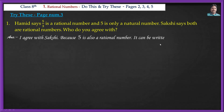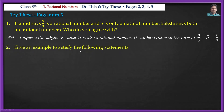Sakshi is correct because 5 is also a rational number — it can be written in the form P/Q. If we write 5 as 5/1, the denominator is 1 (not zero). So 5 qualifies as a rational number. Every whole number, integer, and natural number can be written in P/Q form with denominator 1, making them all rational numbers.